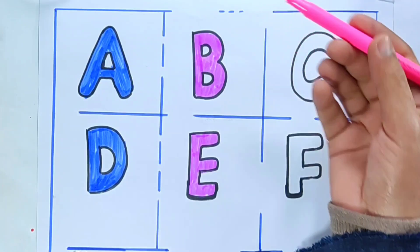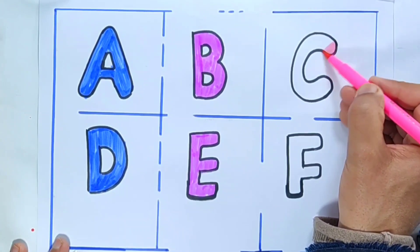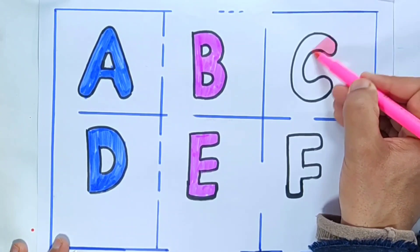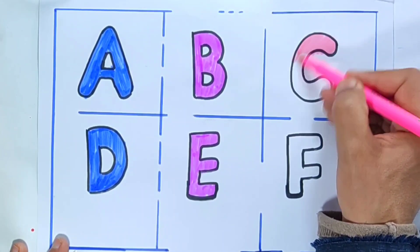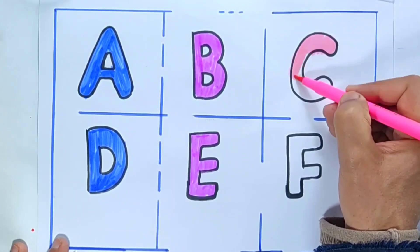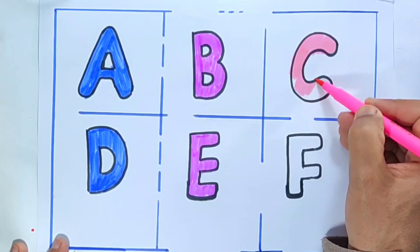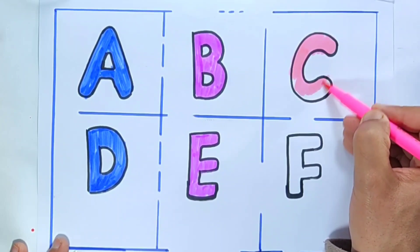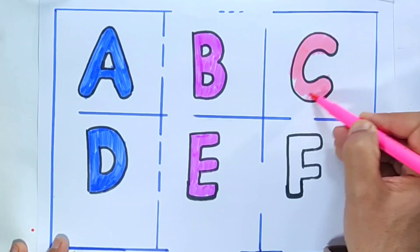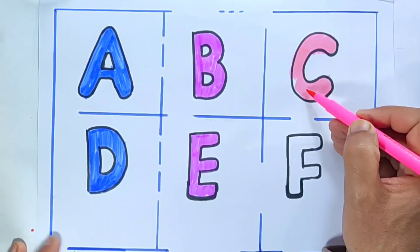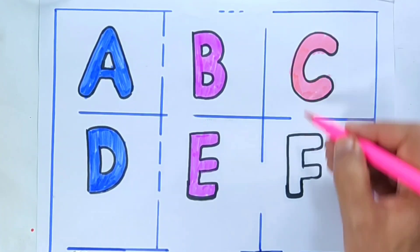Pink color, letter C. C is for cherries. C is for cherry. Pink color, letter C.